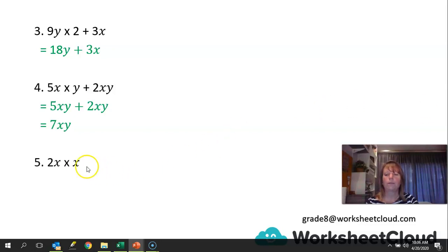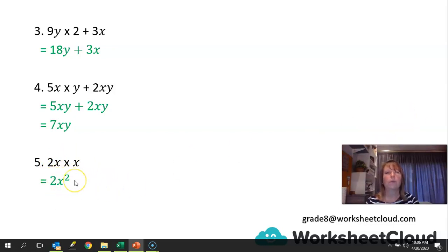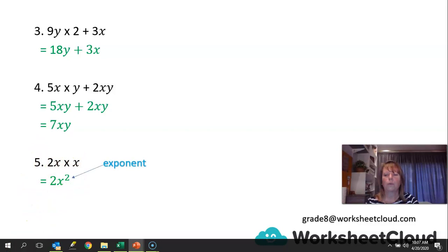The last one: 2x times x. The multiplication says you combine them, and you're going to end up with 2x squared. That would be the same as 4 times 4 being called 4 squared, or 2 times 2 being 2 squared. So x times x is x squared, and the small 2 is called the exponent.